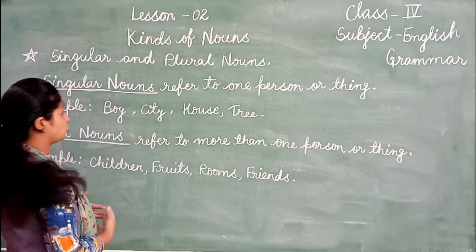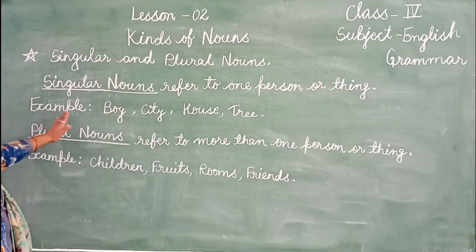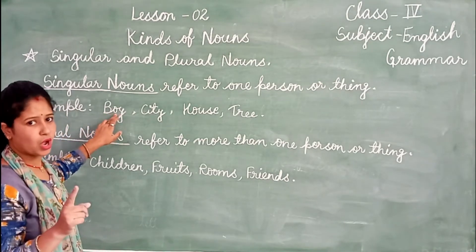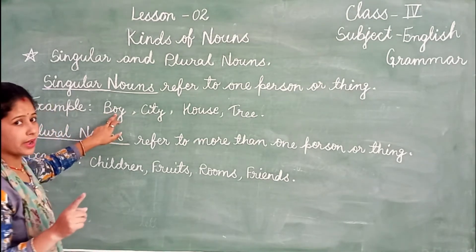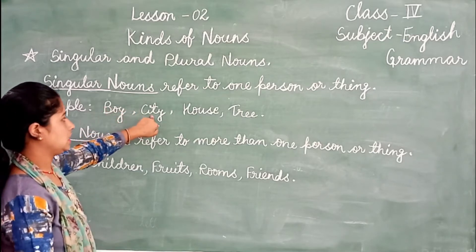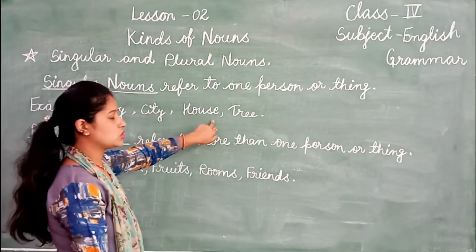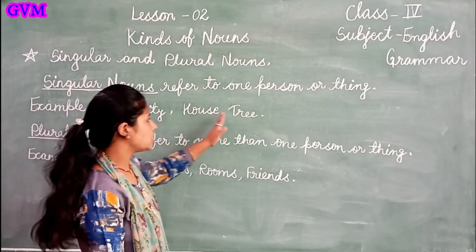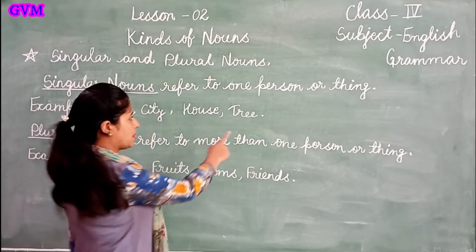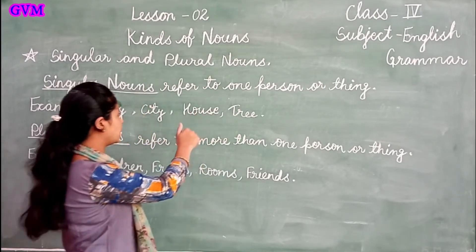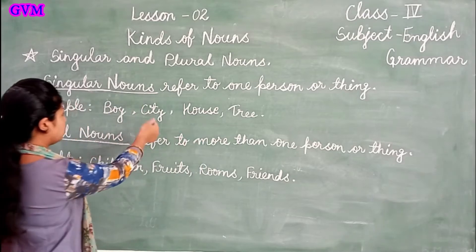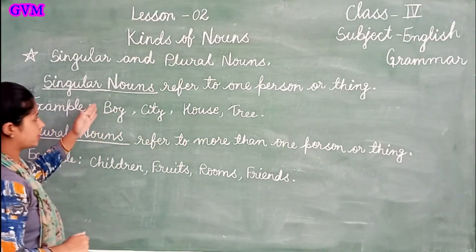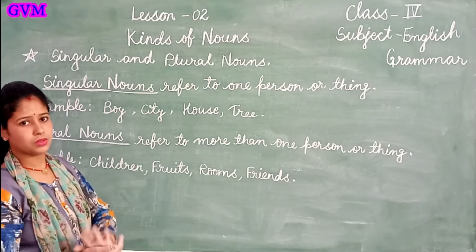We will see the definition of singular nouns. Singular nouns refer to one person or thing. For example: boy — one boy is singular. City, house, tree — these examples are singular. One person or one thing is called a singular noun.